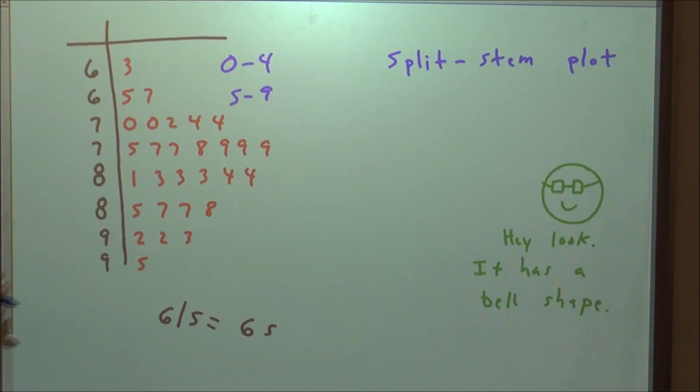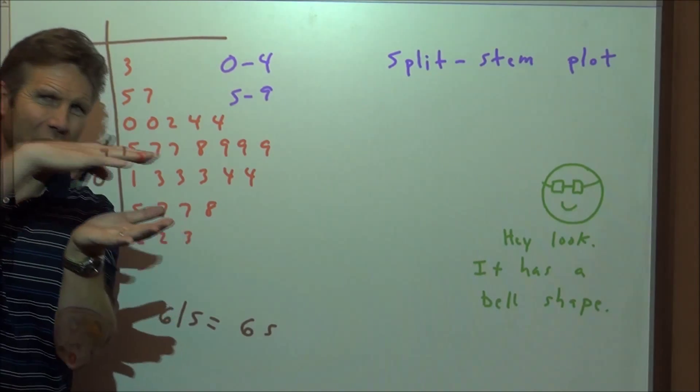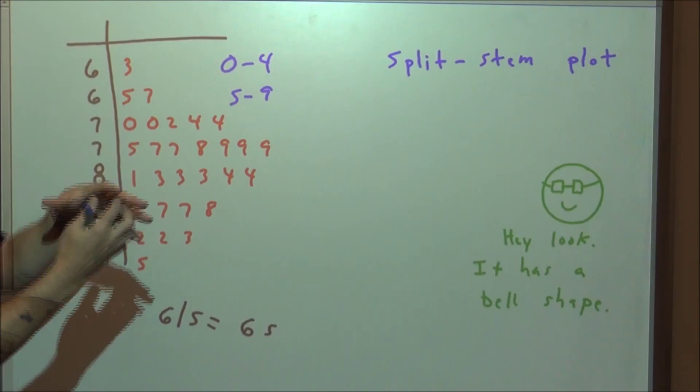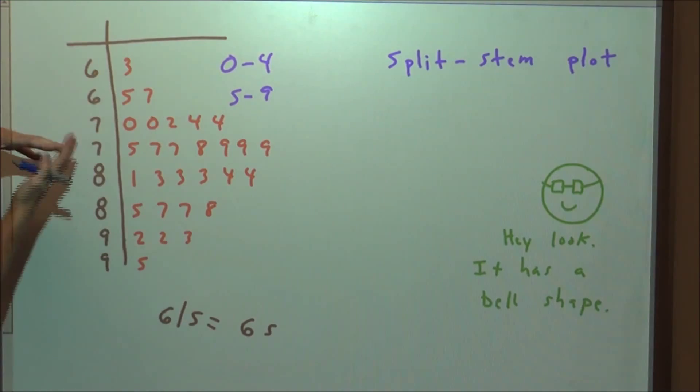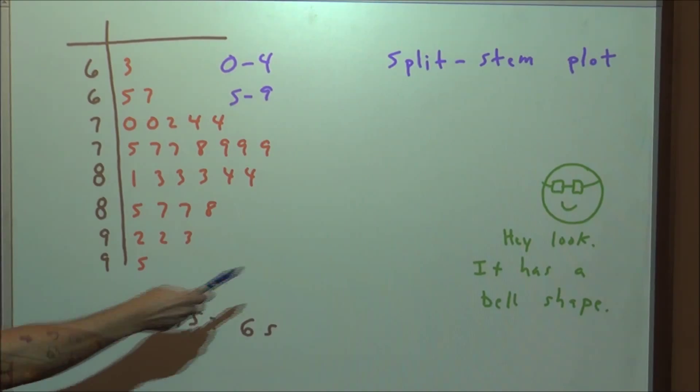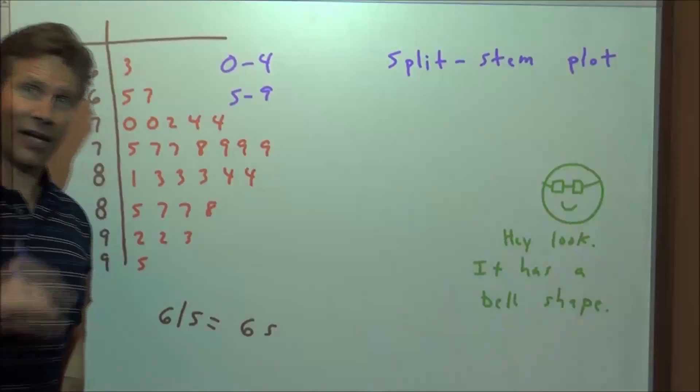A split stem is sometimes more desirable because it gives us more information. If you do a stem plot and you only have three stems, not desirable. You want to split the stems to get more accuracy and get a better feel for what this looks like. And you can see the nerd. Here he is, first time of year, you see the nerd. But he's saying, hey, look, this looks like it has a bell shape.